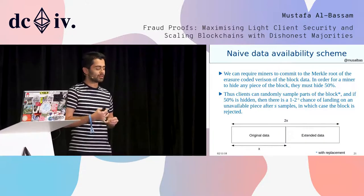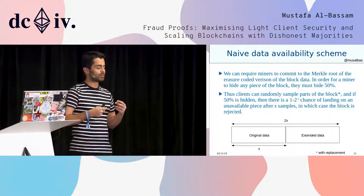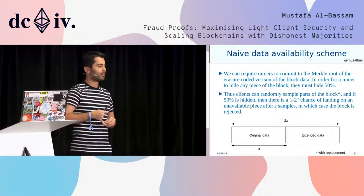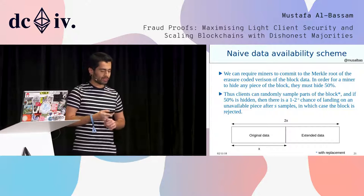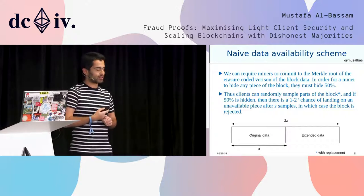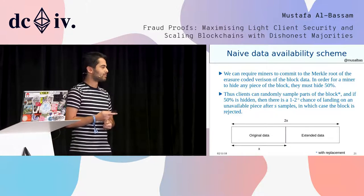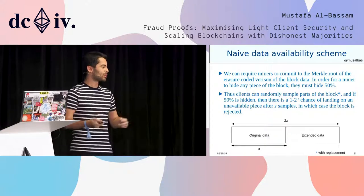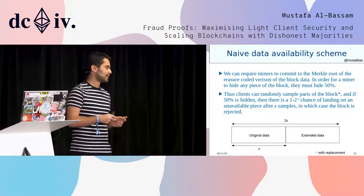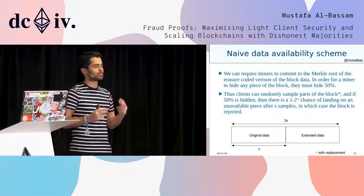There would be a 1 minus 2 to the power of minus S chance of landing on an unavailable block if the block is 50% unavailable. If you land on an unavailable block, you don't receive a response, and then you don't accept the block.